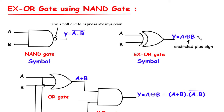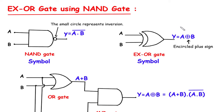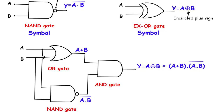Here we can see this is the Boolean expression for XOR gate. Y is equal to A encircled plus B. Now in XOR gate, if there is an odd number of 1s in the input, the output will be high. Otherwise the output will be low or zero.